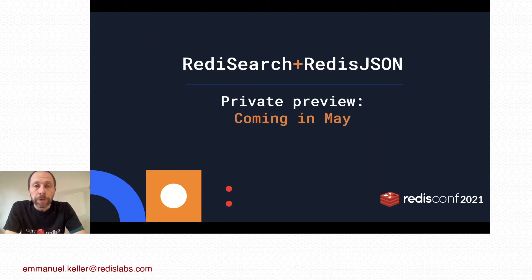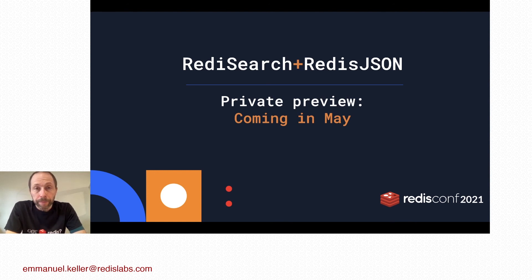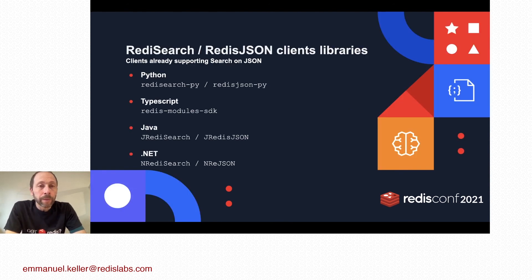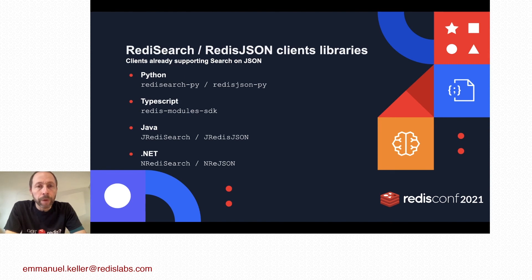These new features come with new versions of the Redis Search and Redis JSON modules, available in private preview in May. When the private preview is available, you will be able to use these clients: Python, TypeScript, Java, and .NET. Additional clients — Go, Rust, and PHP — will soon be updated as well.